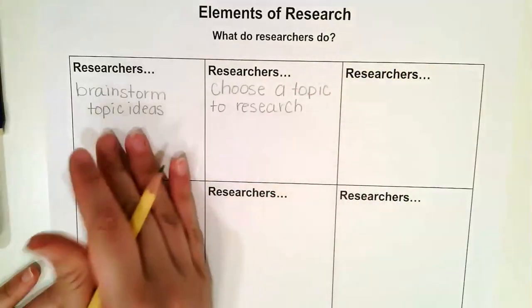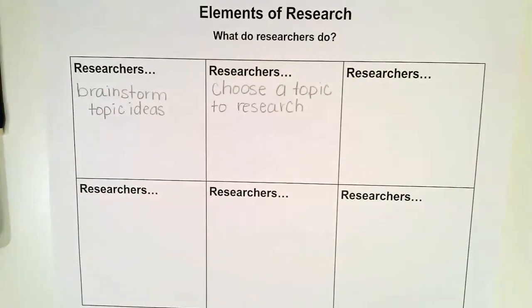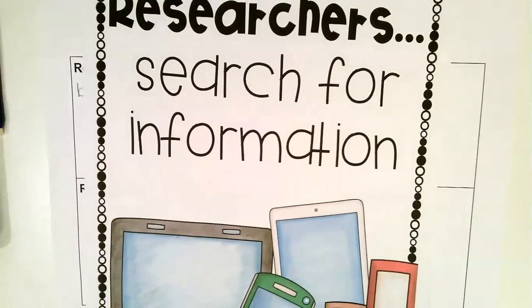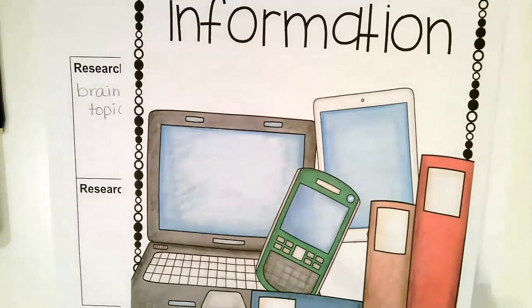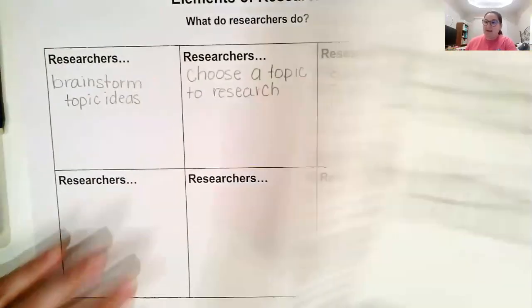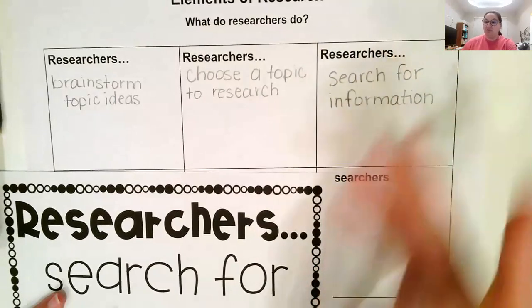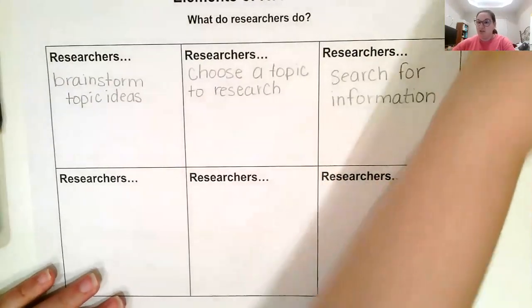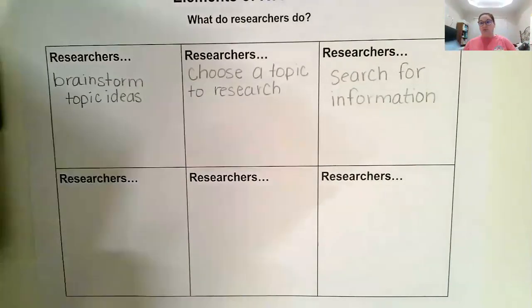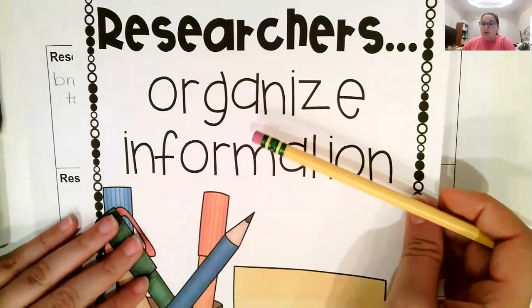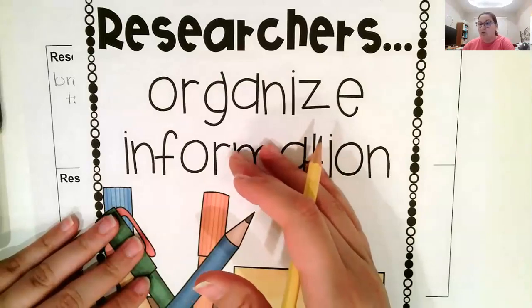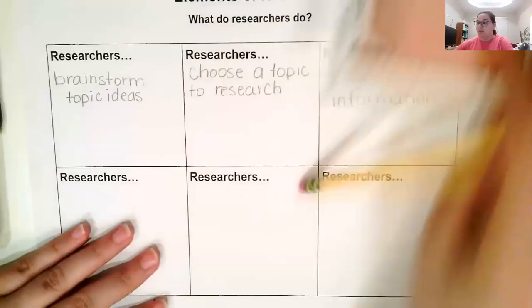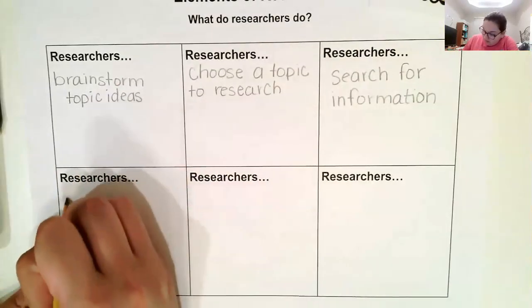Now the third thing — we've brainstormed, we've chosen a topic. Now researchers need to search for information. We use our different resources, whether it's books, magazines, or the internet. So in the third box: 'search for information.' After we search for information, we are going to organize the information — start putting our information into sentences, seeing where in our report we would be writing it. That goes in the next box: 'organize information.'